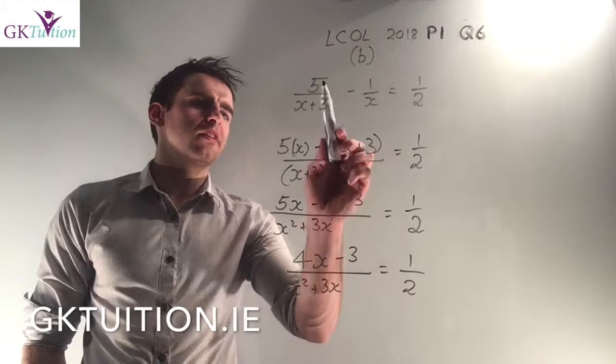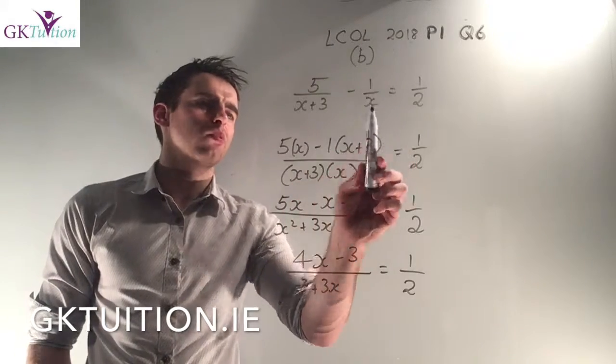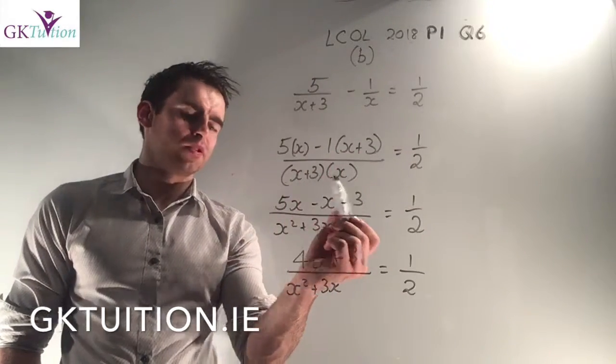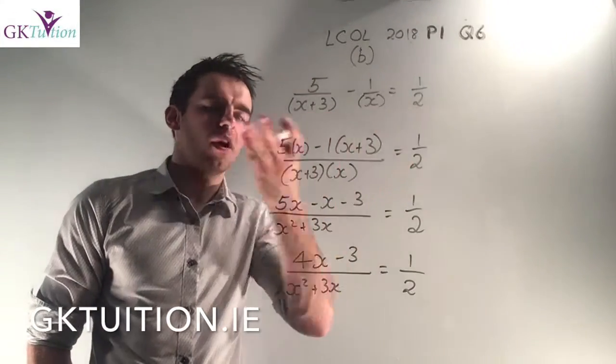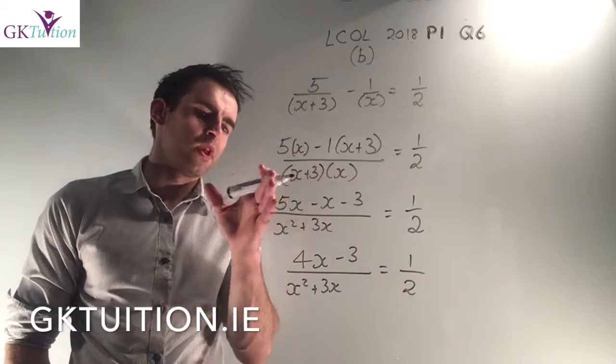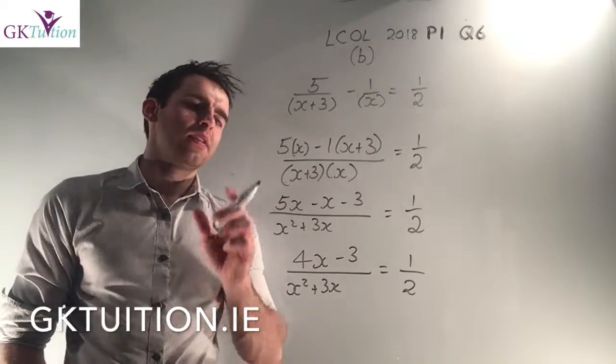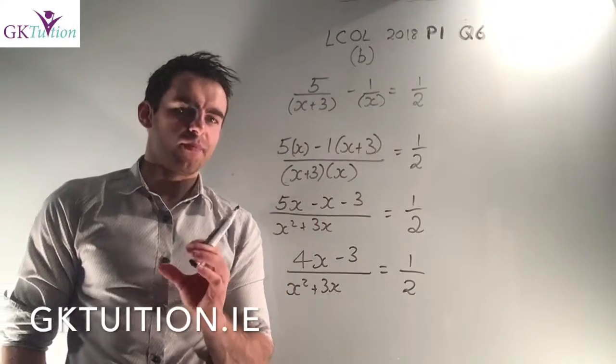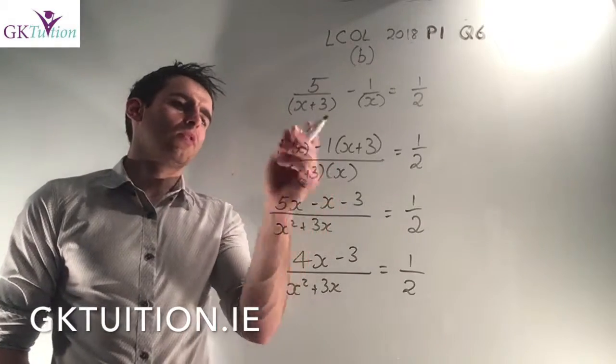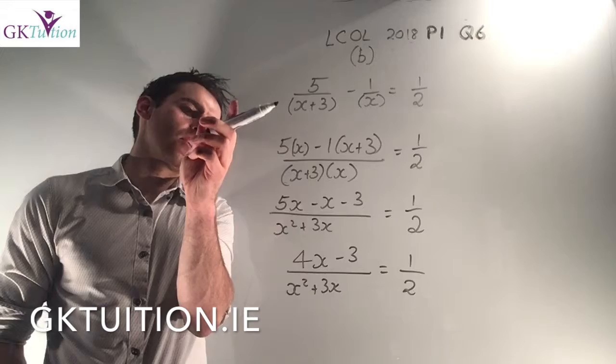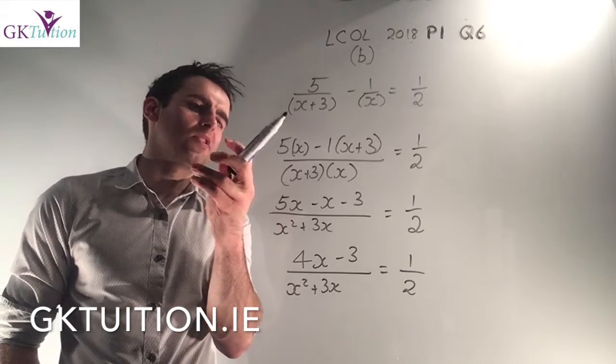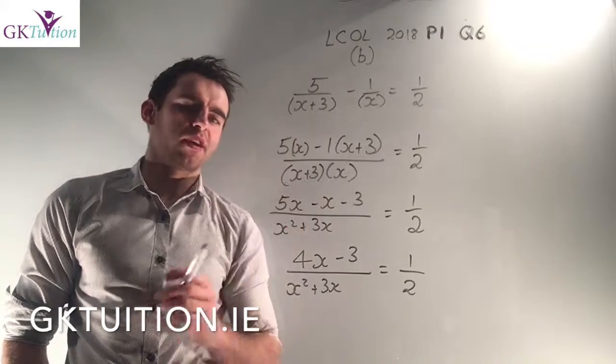The common denominator for 5/(x+3) - 1/x is (x+3) times x. The common denominator you just literally multiply all the denominators by each other. So you get (x+3) by x. Now in order to work out what goes on top you have to be careful. Right, so to deal with this fraction first you're going to put down a 5. Then you're going to ask yourself how many times does (x+3) divide into the common denominator?